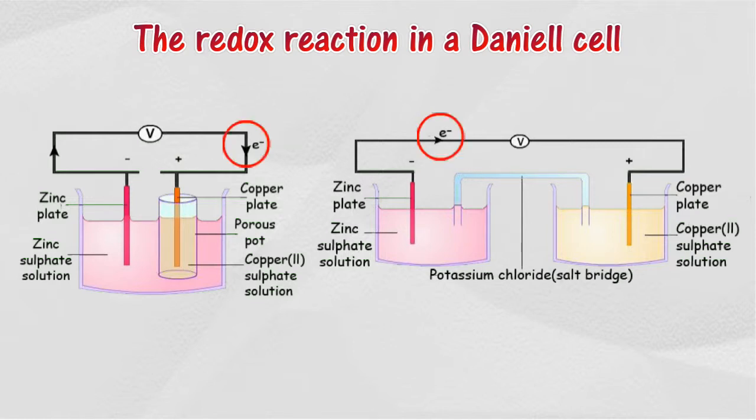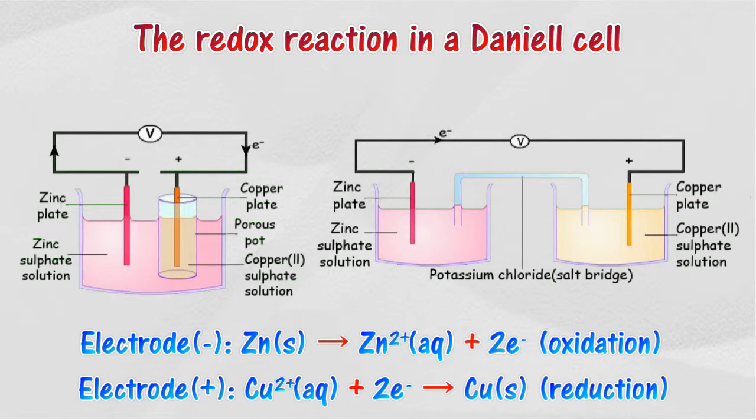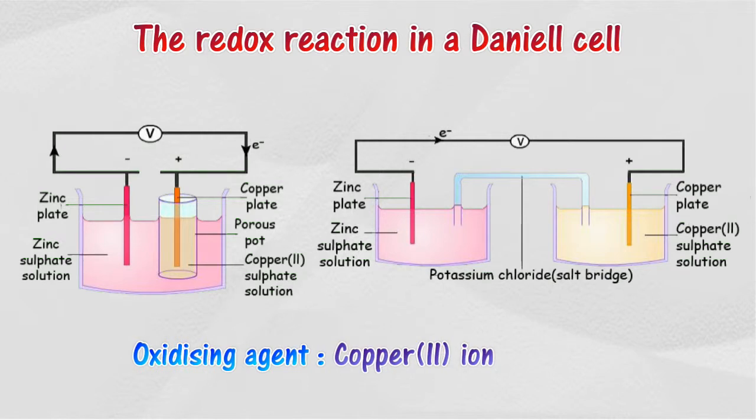The copper rod acts as the positive electrode. In this reaction, zinc is oxidized to zinc ion by the copper ion. At the same time, the copper ion is reduced by zinc to copper. Copper ion acts as the oxidizing agent, while zinc acts as the reducing agent.